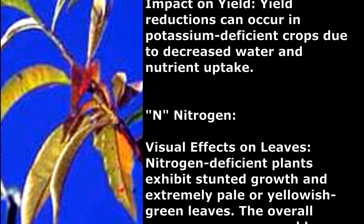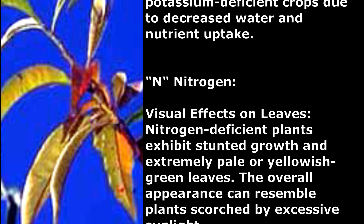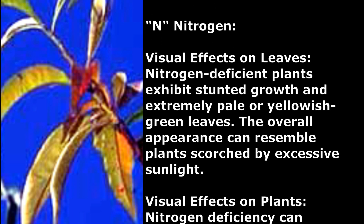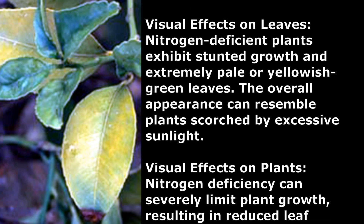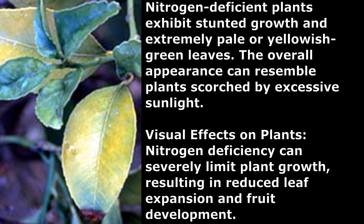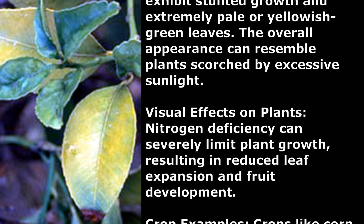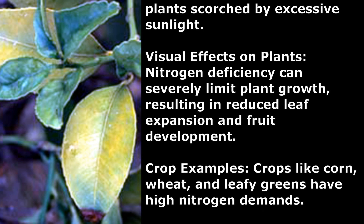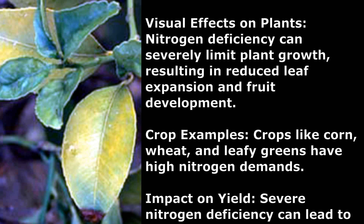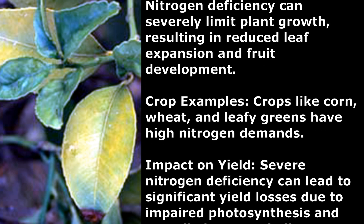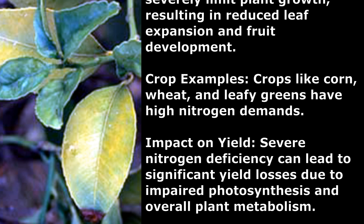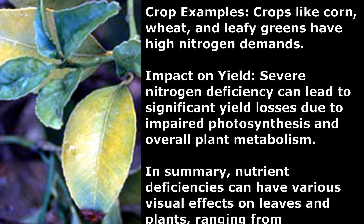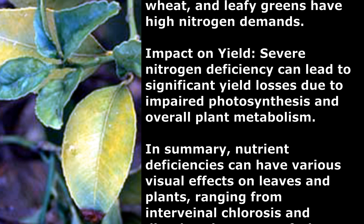Nitrogen. Visual Effects on Leaves: Nitrogen-deficient plants exhibit stunted growth and extremely pale or yellowish-green leaves. The overall appearance can resemble plants scorched by excessive sunlight. Visual Effects on Plants: Nitrogen deficiency can severely limit plant growth, resulting in reduced leaf expansion and fruit development. Crop Examples: Crops like corn, wheat, and leafy greens have high nitrogen demands. Impact on Yield: Severe nitrogen deficiency can lead to significant yield losses due to impaired photosynthesis and overall plant metabolism.